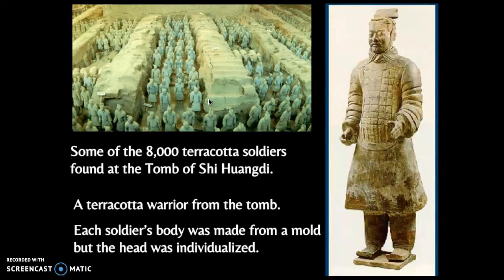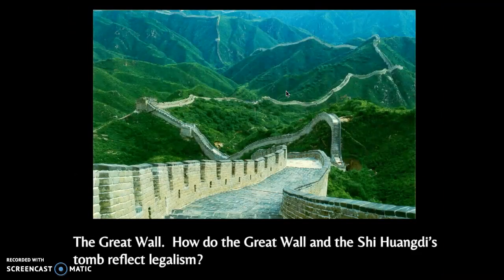After the Zhou dynasty there was a 200-year period of civil war until Qin Shi Huangdi brought China — or a large part of China — under the Qin dynasty. One of his great accomplishments is his tomb, and the terracotta army that surrounds and guards it. These are sunny examples of classical Chinese dynasties along with the Great Wall. Consider how the Great Wall, this fortification, and his tomb showing military strength reflect legalism.